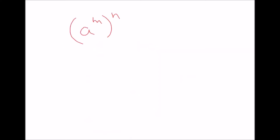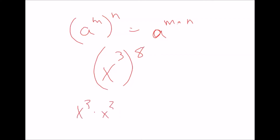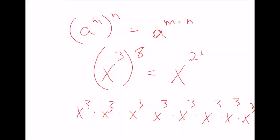The second property is when you take a power to another power. So let's say you have a to the m power, and you take that to a power n. In this situation, you will multiply the exponents together: a to the m times n. In a real example, let's say you have x to the 3rd to the 8th power. You don't need to write it all out — just multiply 3 times 8, and you'll get x to the 24th power.